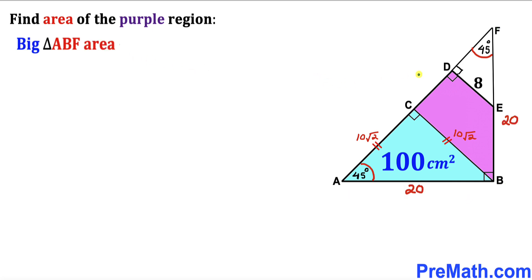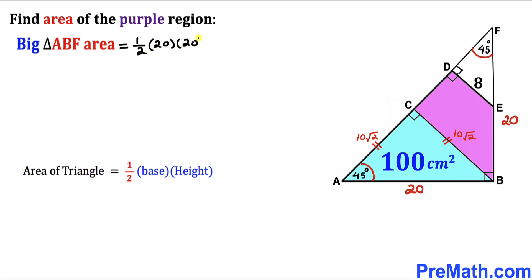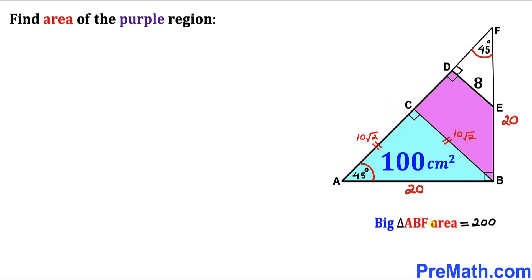Now let's calculate the area of the bigger triangle ABF. Using the area formula — one half times base times height — our base is 20 and our height is 20 centimeters as well. So the area of triangle ABF equals one half times 20 times 20, which turns out to be 200 centimeter square.